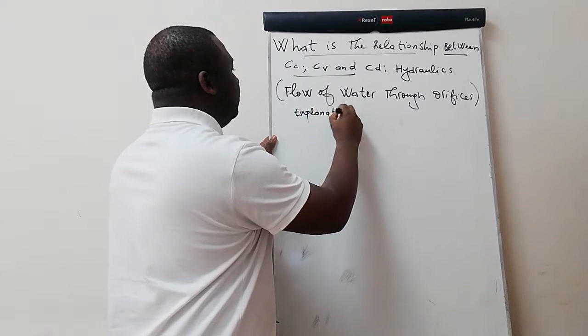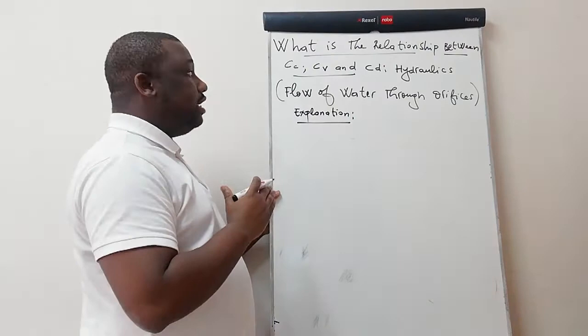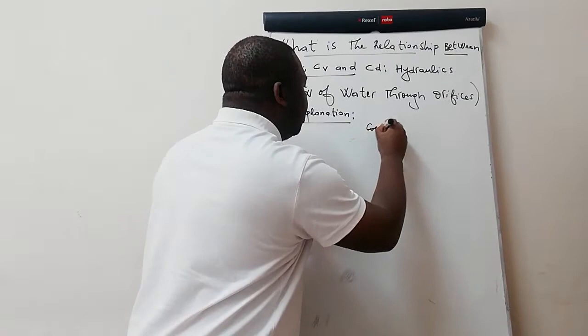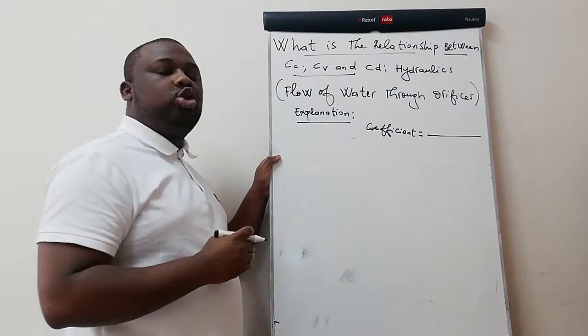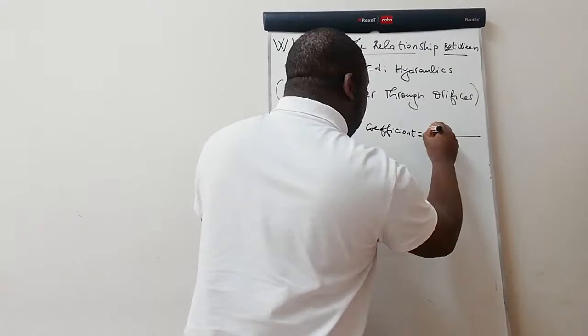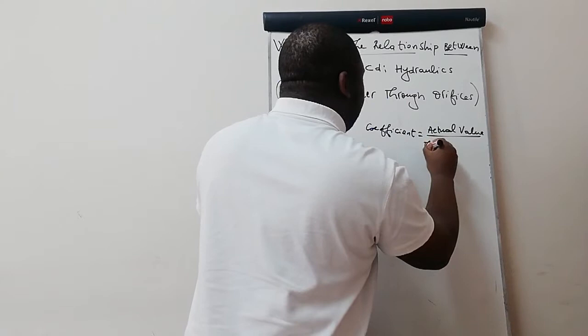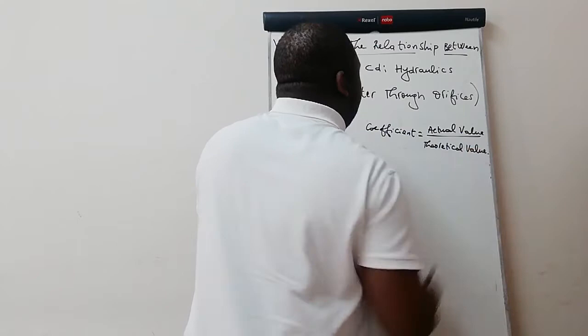Before explaining anything, you need to know that under flow of water through orifices, when they talk of a coefficient, the coefficient is equal to the actual value over the theoretical value. So it's actual value over the theoretical value. Then from now, we can actually explain each of them.